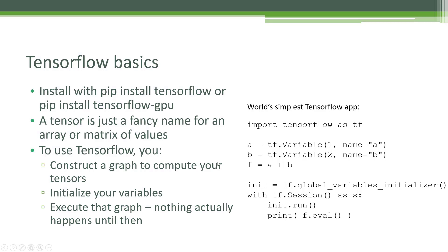The next thing we need to do is actually initialize those global variables. You explicitly need to say now's the time to put those initial values into my variables. We create an object called init — that is our global variables initializer — and then we define a session within TensorFlow, called S. We take our global variables initializer object and run it, which stuffs the values one and two inside our A and B variables, initializing them to the values we defined when we created them. Then we call F dot eval, and this is where computation will actually finally happen. Once we call eval on our F object, it will create a graph that takes A, which contains one, and B, which contains two, add them together, and figure out how to distribute that operation across your entire cluster — and that will ultimately print the result three.